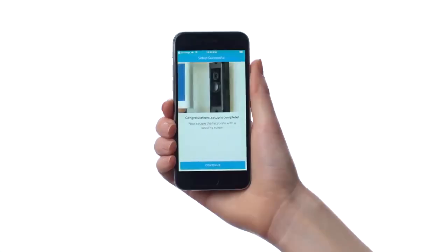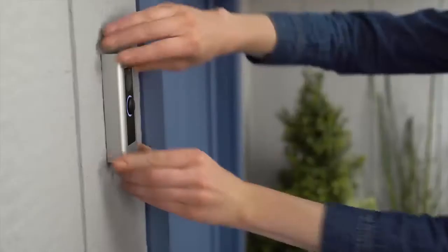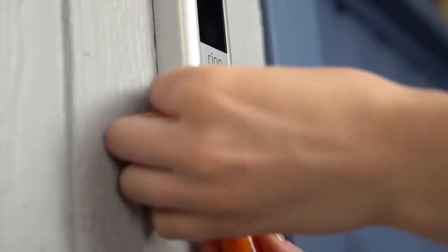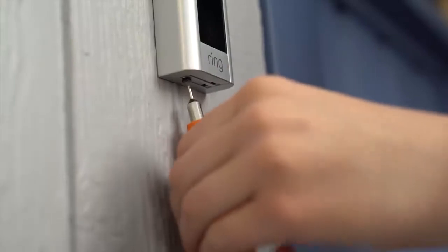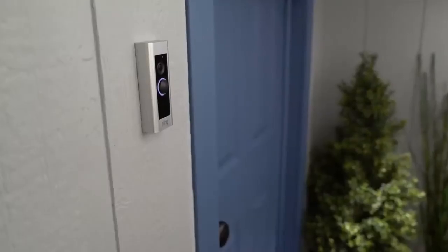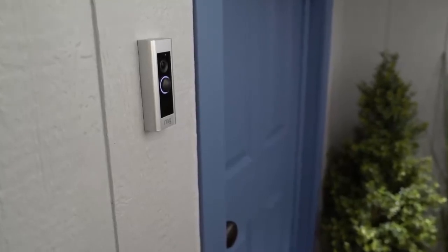Next, snap the faceplate of your choice onto your Ring doorbell. Finally, insert one of the included security screws into the hole on the bottom and tighten it using the star-shaped end of your Ring screwdriver. Now, your Ring Video Doorbell Pro is ready to go.